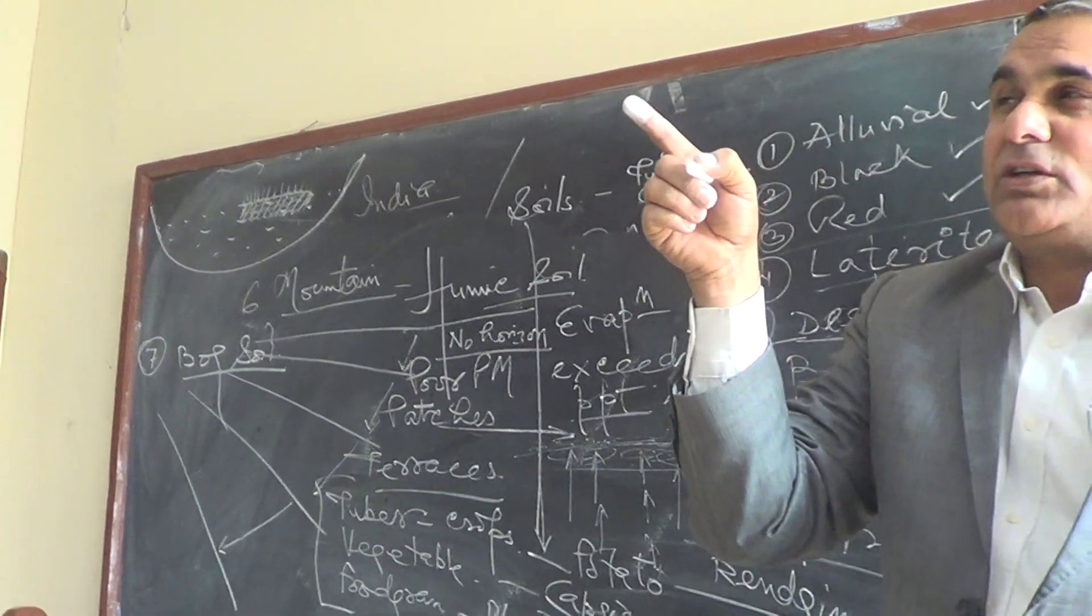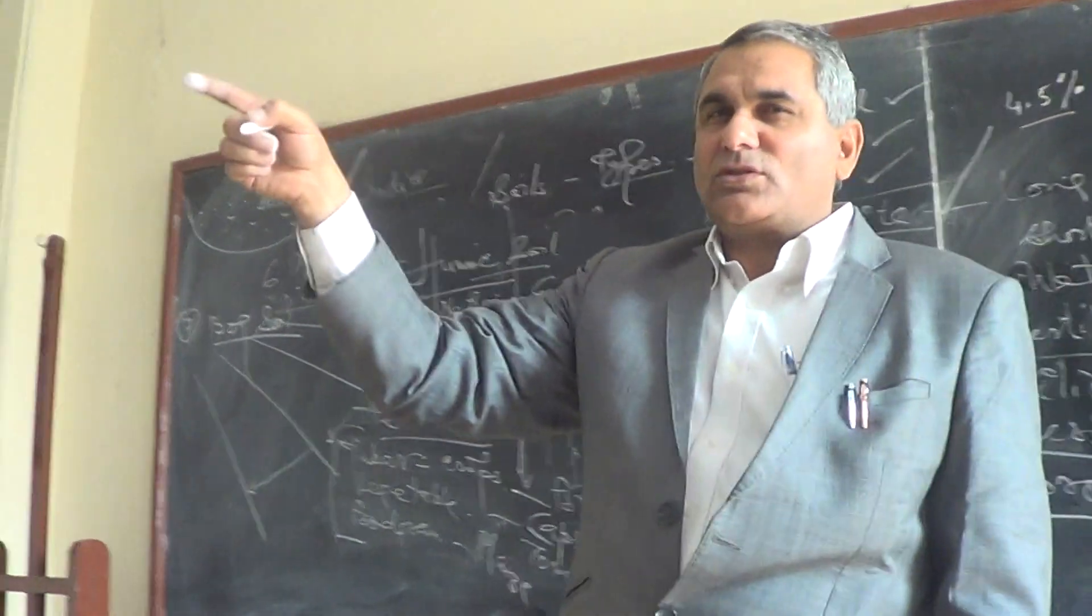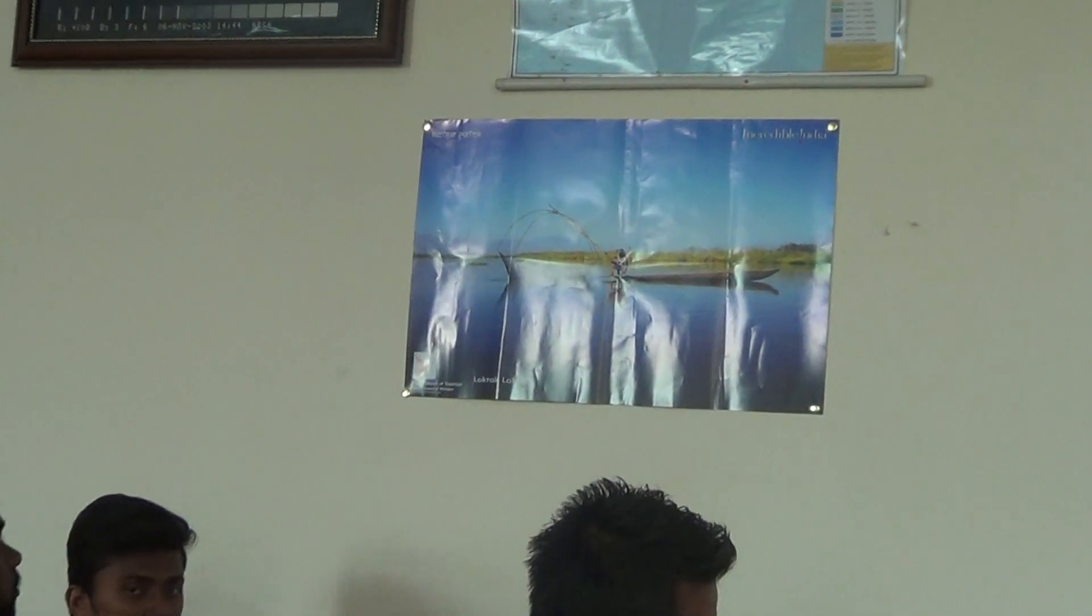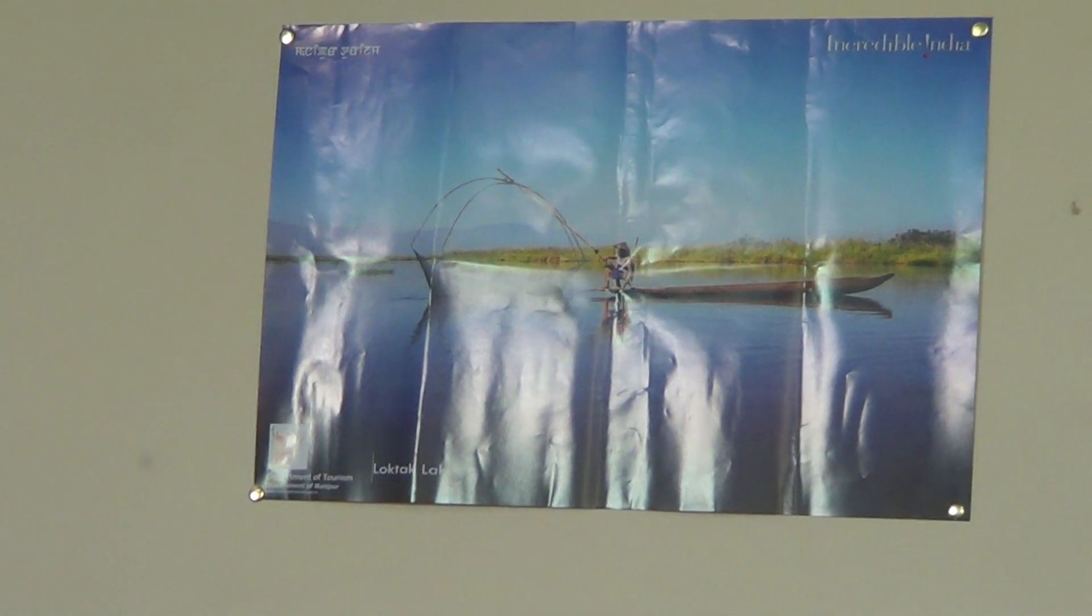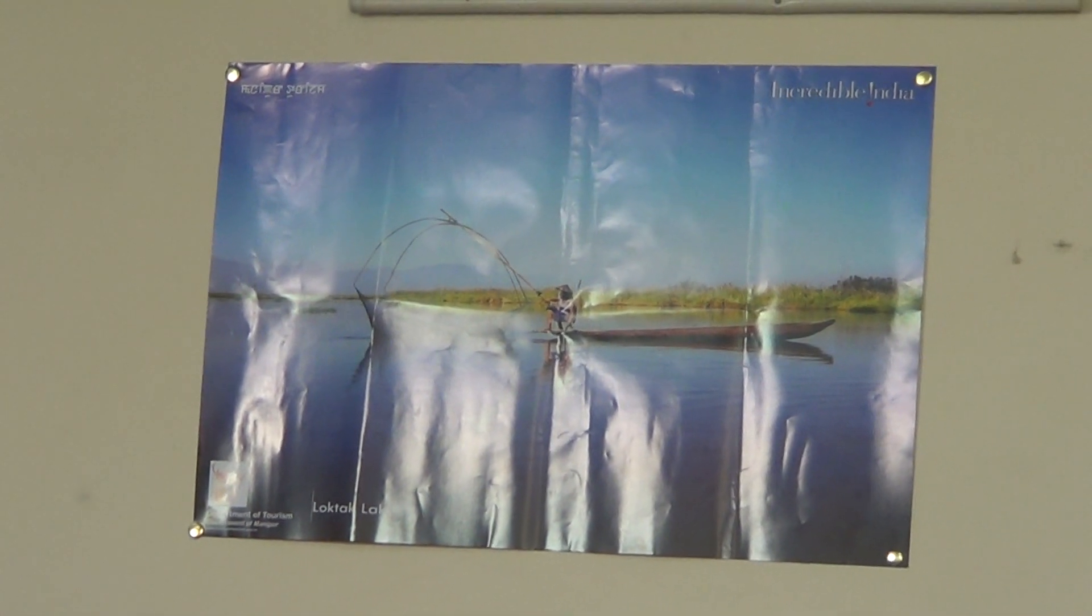In Loktuk, if you see behind the boat, the green patch visible is that kind of vegetation - a kind of floating field.